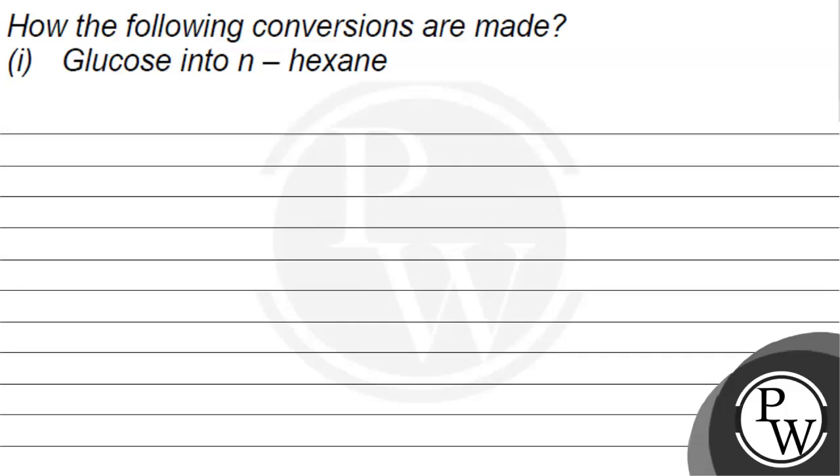Hello, let's see the question. The question says, how are the following conversions made? Glucose into n-hexane. So let's see our key concept for the question.